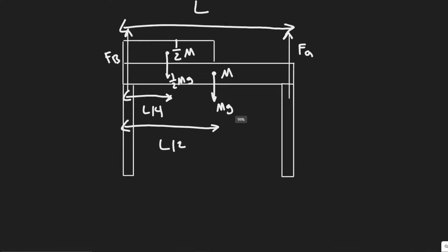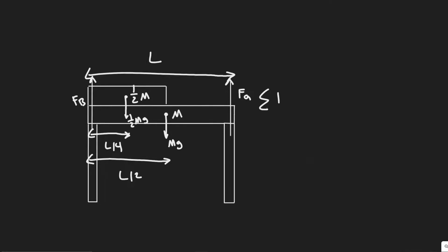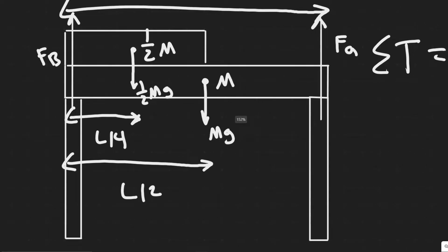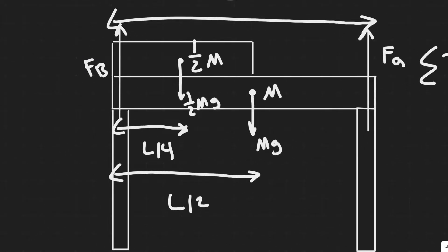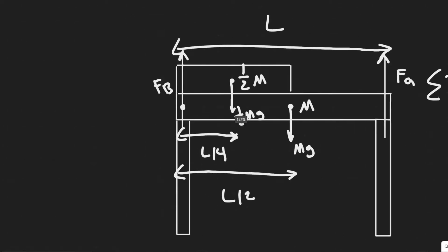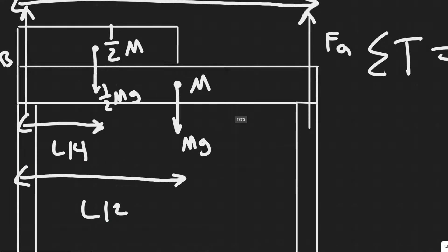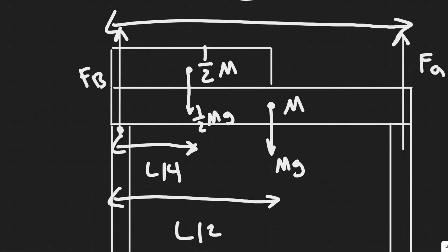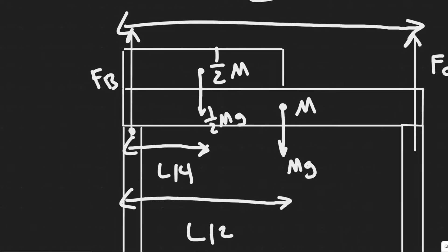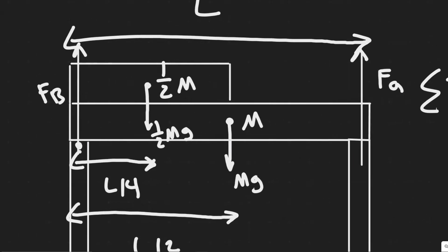The way we're going to solve this is by summing the torque about a specific point. We're going to choose the point at the FB end. The reason is that torque equals force times distance, so we can eliminate FB since its distance from the pivot is zero — meaning the only unknown when we solve is FA.